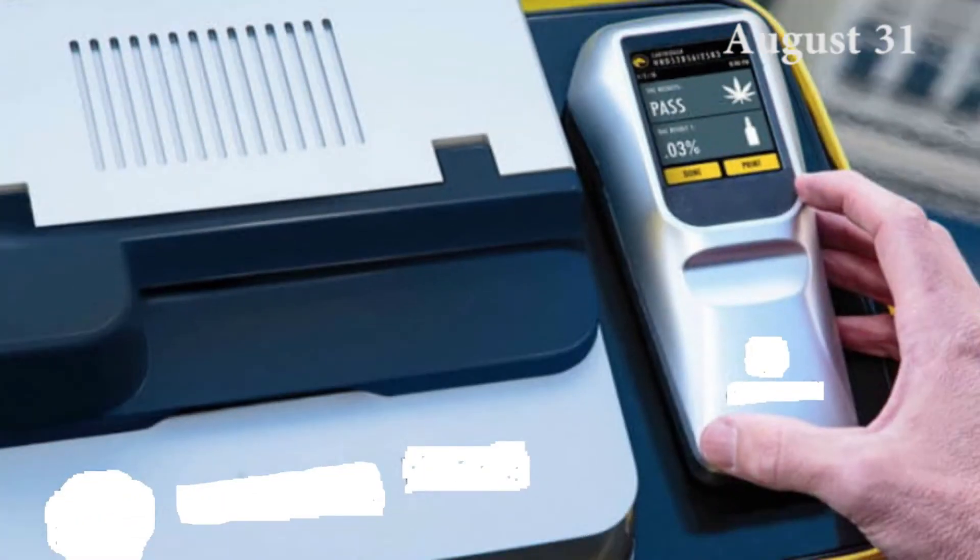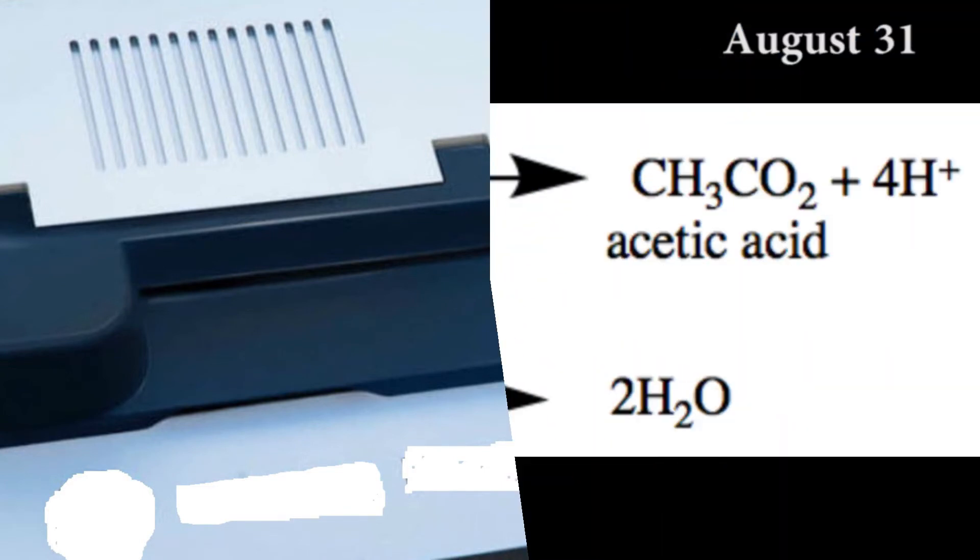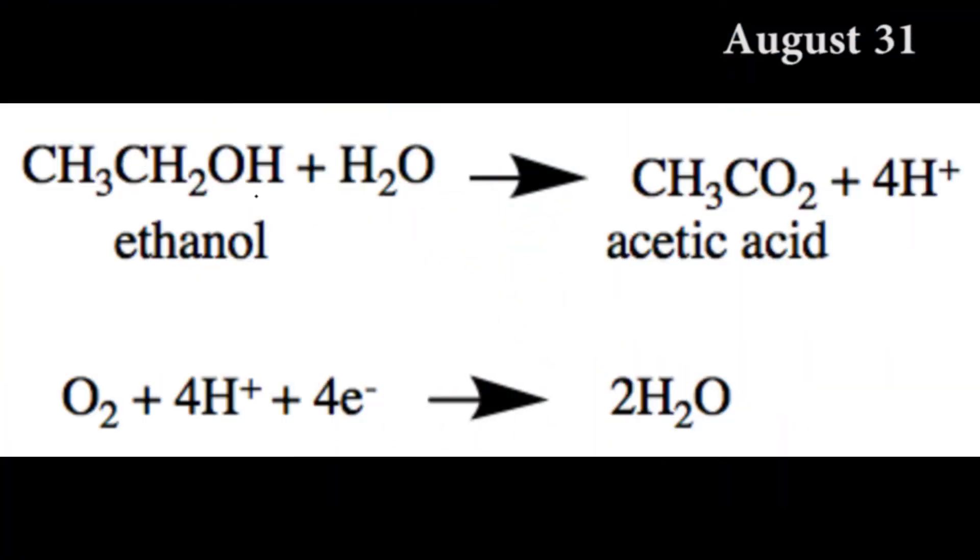When a person exhales into a breathalyzer, any ethanol present in their breath is oxidized to acetic acid at the anode. At the cathode, atmospheric oxygen is reduced.